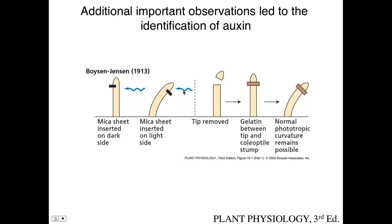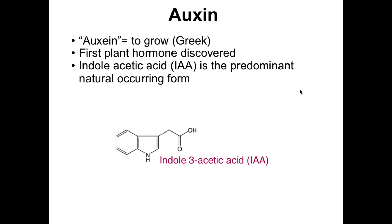Another group cut off the tip of the seedling, placed a sheet of gelatin, put the cap back on, and found that curvature still occurred — so whatever the signal was, it had to be aqueous and mobile through gelatin. This allowed fractionation of the gelatin to identify compounds present, eventually leading to the discovery of acetic acid — or auxin. Auxin comes from the Greek word for 'to grow,' is the first plant hormone discovered, and drives both cell division and cell expansion in plants.